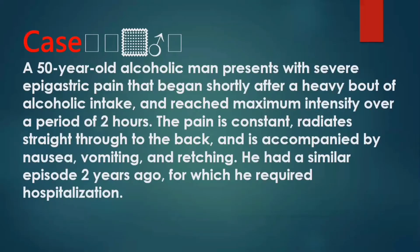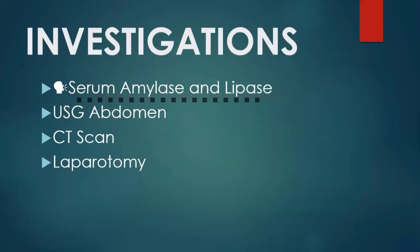How do we diagnose this patient? The first investigation is serum amylase and lipase. In acute pancreatitis, amylase level increases up to four-fold of normal. Serum lipase is also elevated in 76 to 90% of cases, remains elevated for longer than amylase, and is more specific than amylase.